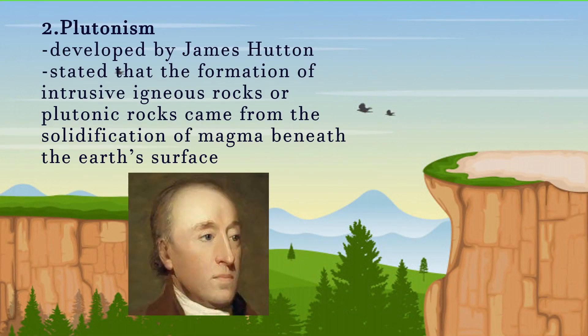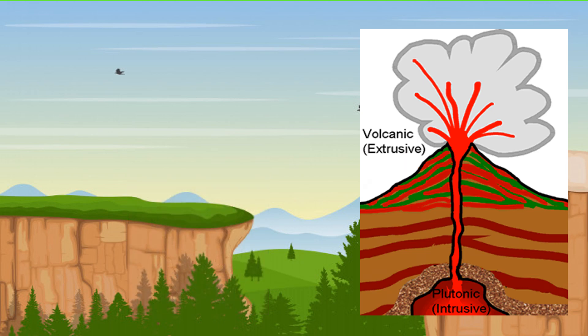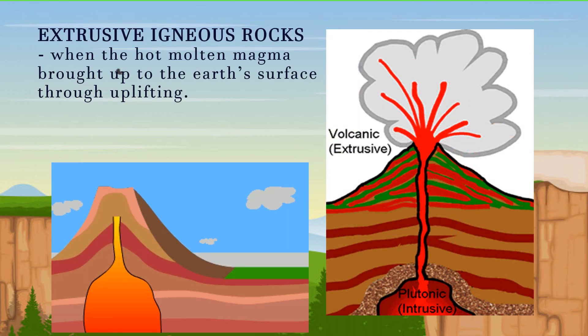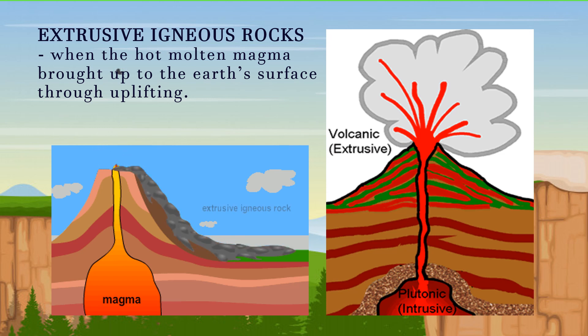2. Plutonism is an idea developed by James Hutton in 1788. He stated that the formation of intrusive igneous rocks or plutonic rocks came from the solidification of magma beneath the earth's surface. When the hot molten magma does not solidify, it will be brought up to the earth's surface through uplifting. When the magma reaches the surface, it becomes lava — streams of molten rocks that cool and solidify to form extrusive igneous rocks.